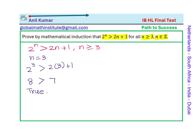Now we need to assume that it will be true for n equals to k. So we will say assume that 2 to the power of k is greater than 2k plus 1. So that is our assumption.